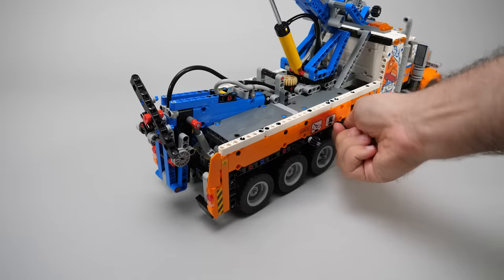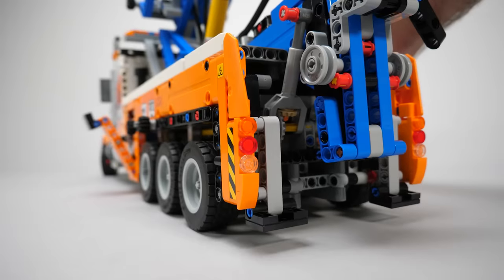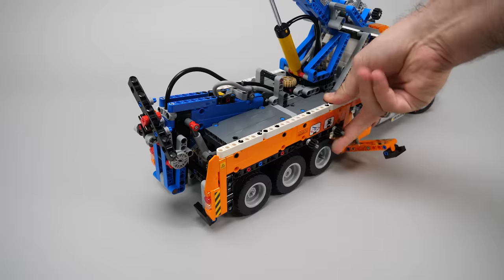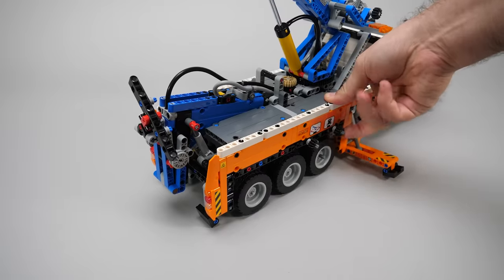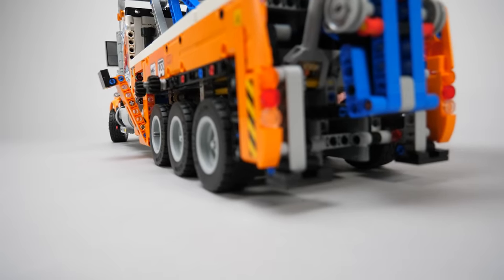The other knob operates the outriggers. We have a single knob for both side and rear outriggers. I know some of you might prefer to control them separately, but I think it is fine. Especially if you consider that the rear and side ones have a completely different range of motion, yet they can be still controlled together.